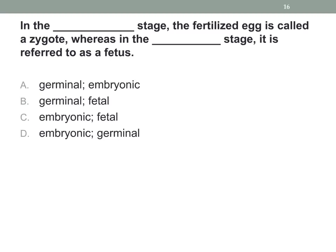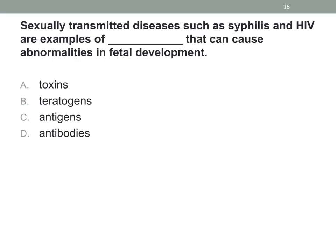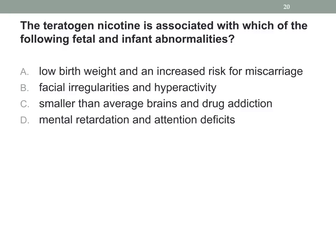Another question: in what stage is the fertilized egg called a zygote, and in what stage is it referred to as a fetus? The correct answer is B — germinal and fetal. And: sexually transmitted diseases such as syphilis and HIV are examples of what that can cause abnormalities in fetal development? These are teratogens.